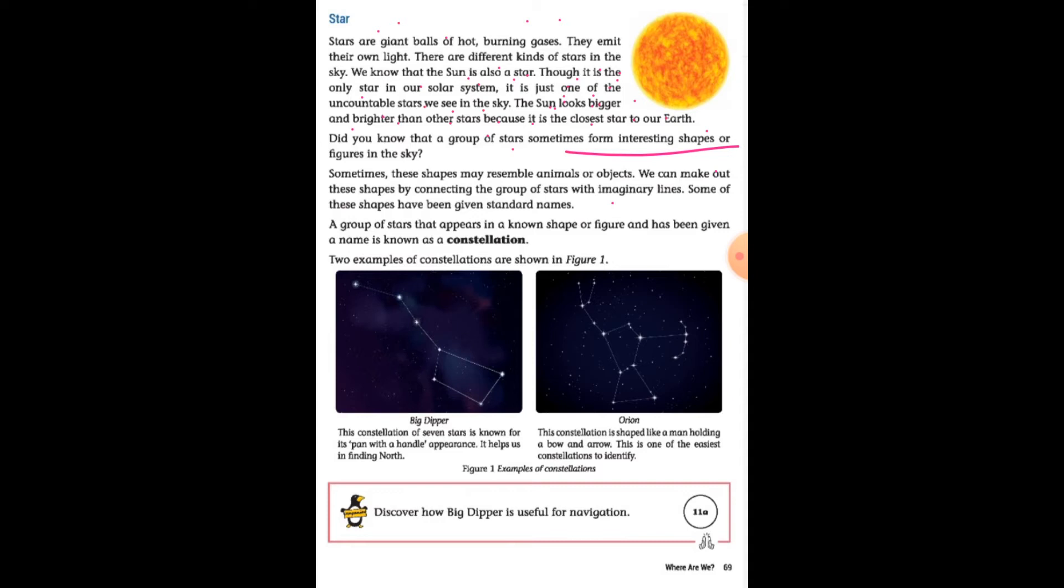Sometimes these shapes may resemble animals or objects. We can make these shapes by connecting the groups of stars with imaginary lines. Some of these shapes have been given standard names.